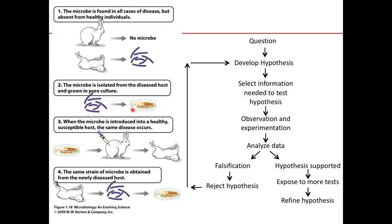The third postulate is illustrated by taking microbes from the pure culture and introducing them into a healthy susceptible host — the same disease occurs. The fourth postulate requires that you must be able to re-isolate and grow in pure culture the same pathogen that was isolated in the first instance.